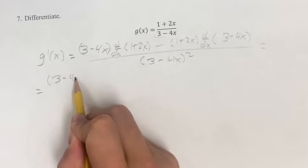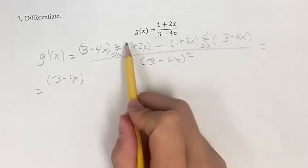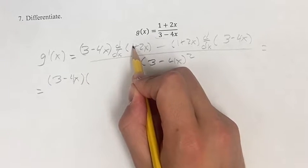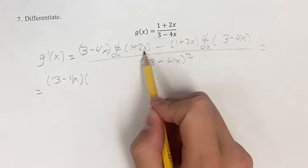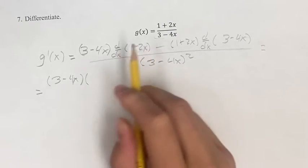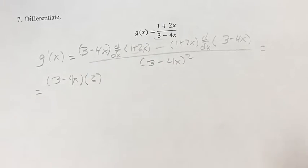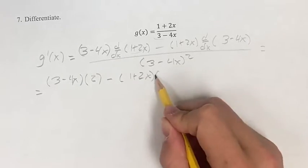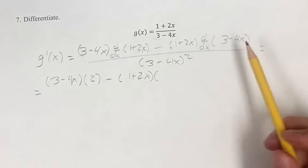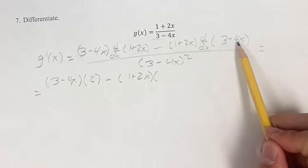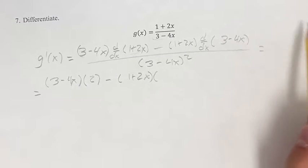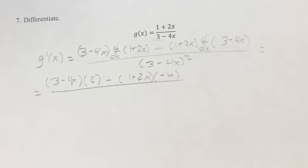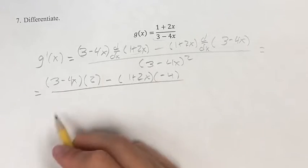Simplifying this out, we get 3 minus 4x times the derivative of the numerator. The derivative of 1 is just 0 since 1 is a constant. The derivative of this linear term is equal to its coefficient, which is just 2, so we get 0 plus 2. Minus 1 plus 2x times the derivative of the denominator. The derivative of the constant is 0, and the derivative of the linear term gives us the coefficient, so 0 minus 4 is negative 4. And this is all over 3 minus 4x squared.